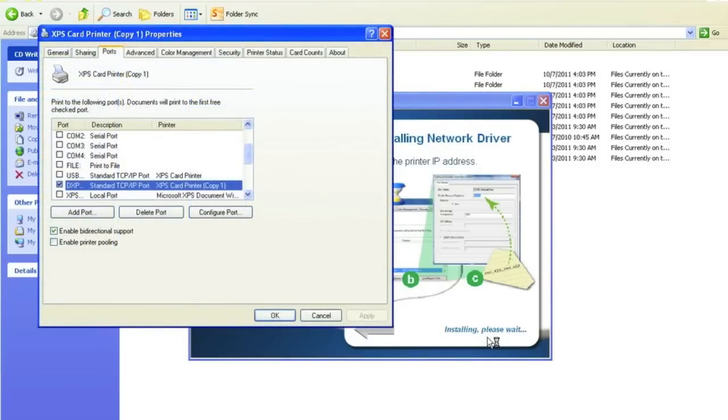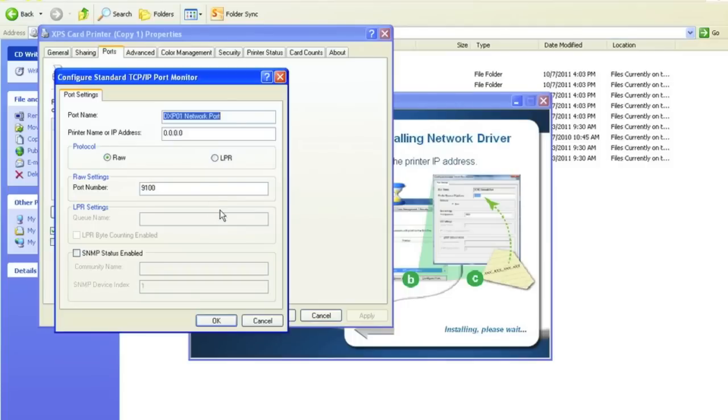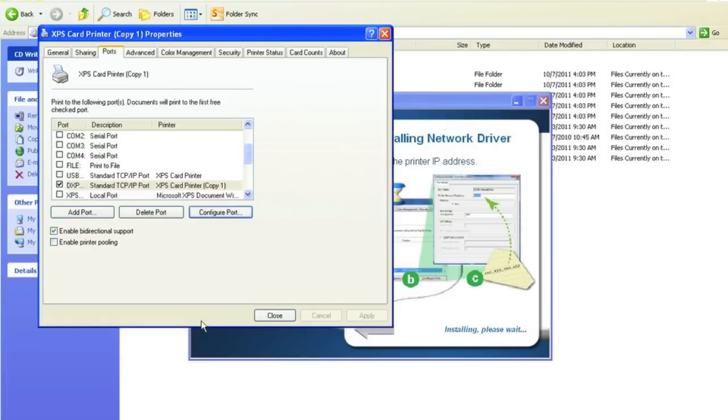Once you receive the Properties box of your printer, select the Configure Port button. Underneath the printer name or IP address, type in your IP address. Select OK and select Close.